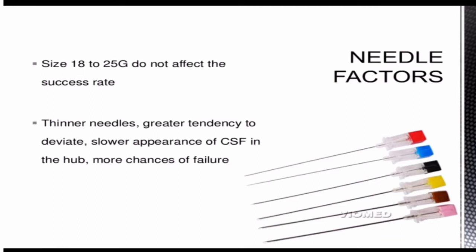Regarding needle factors for failure of spinal anesthesia: sizes 18 to 25 gauge do not significantly affect the success rate. However, thinner needles of 26 gauge onwards have a greater tendency to deviate and produce slower appearance of CSF in the hub, resulting in a higher chance of failure.